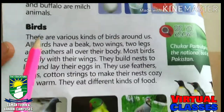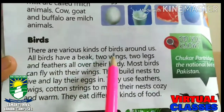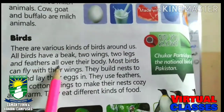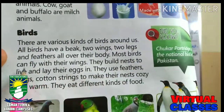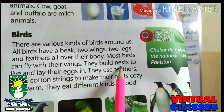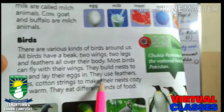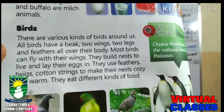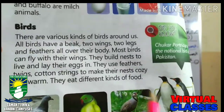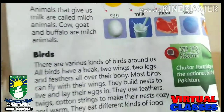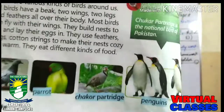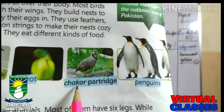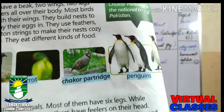Now we are talking about birds. There are various kinds of birds around us. All birds have a beak, two wings, two legs, and feathers all over their body. Most birds can fly with their wings. They build nests to live in and lay their eggs. They use feathers, twigs, cotton, and string to make their nests cozy and warm. They eat different kinds of food. Examples of birds are pigeon, parrot, chakor, partridge, and penguins.